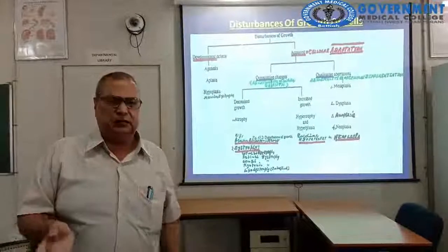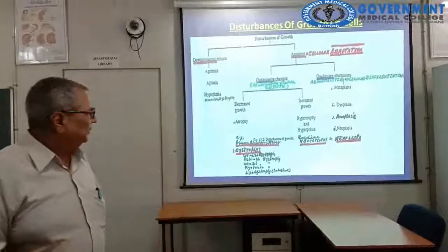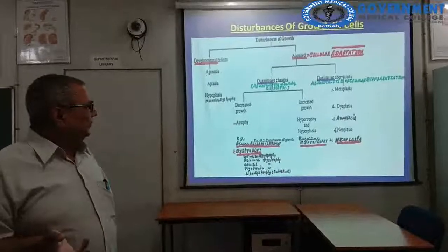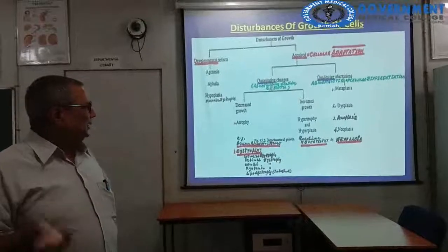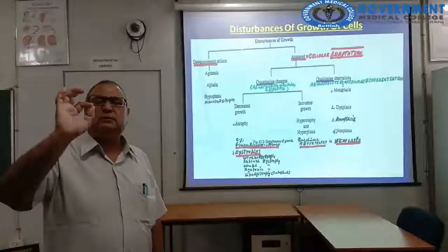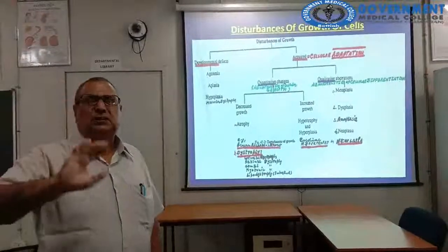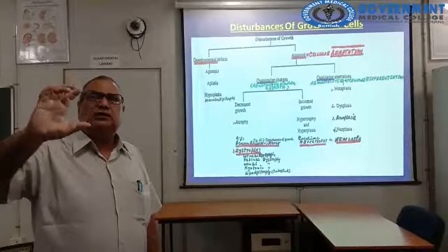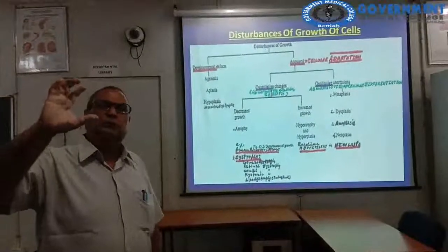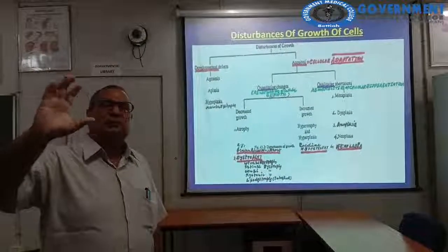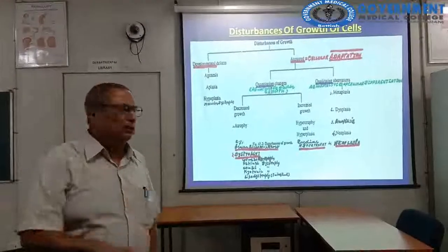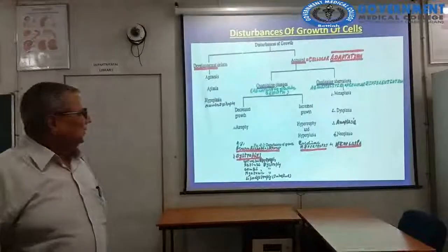An example is cardiac hypertrophy, where isolated hypertrophy of cardiac muscles occurs — that is, increased volume through increased formation of protoplasm without division of the cell.